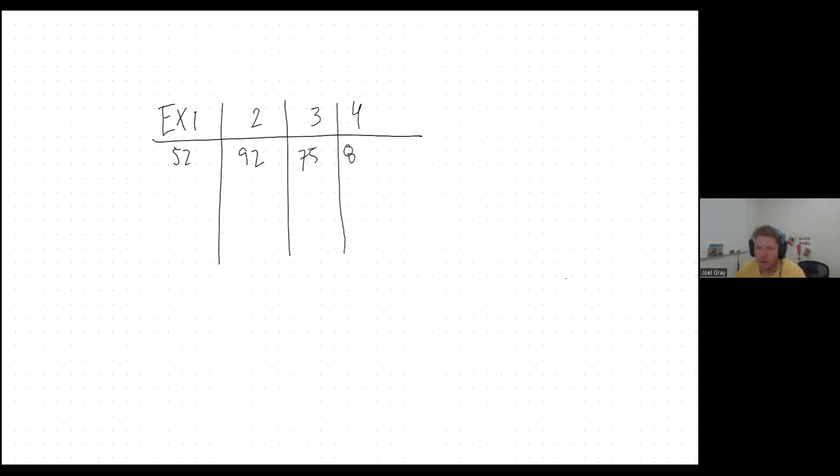If they have that grade combination, the gradebook right now is omitting that 52. And so what you would see in your grade is you would see that 92 plus 75 plus 80 would be 247 divided by 3. And therefore the average that you're showing in the gradebook is an 82, 82.3.